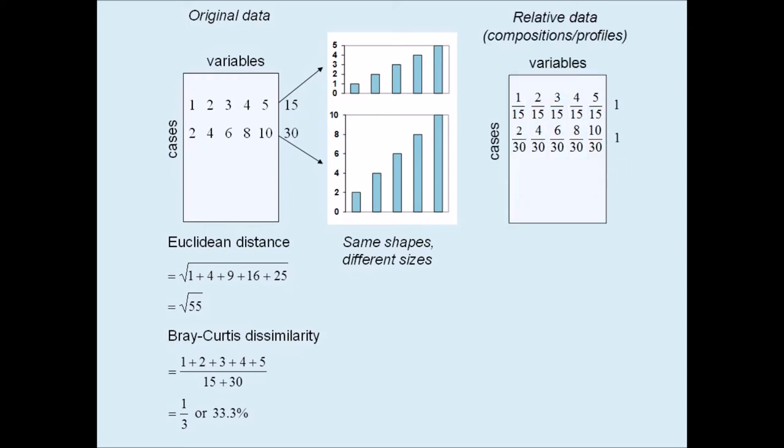If the counts are expressed as relative ones, called compositions or profiles, which sum to 1, then the two profiles are identical and the Euclidean distance, as well as the Bray-Curtis dissimilarity, are clearly both 0.